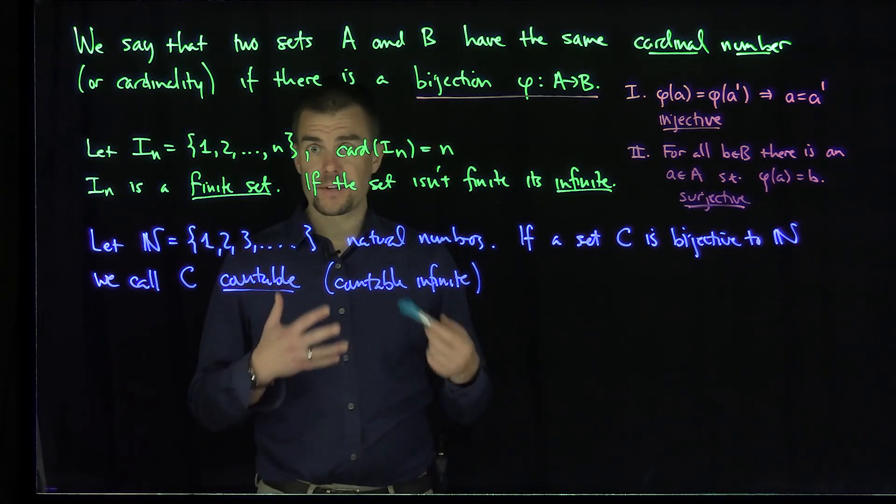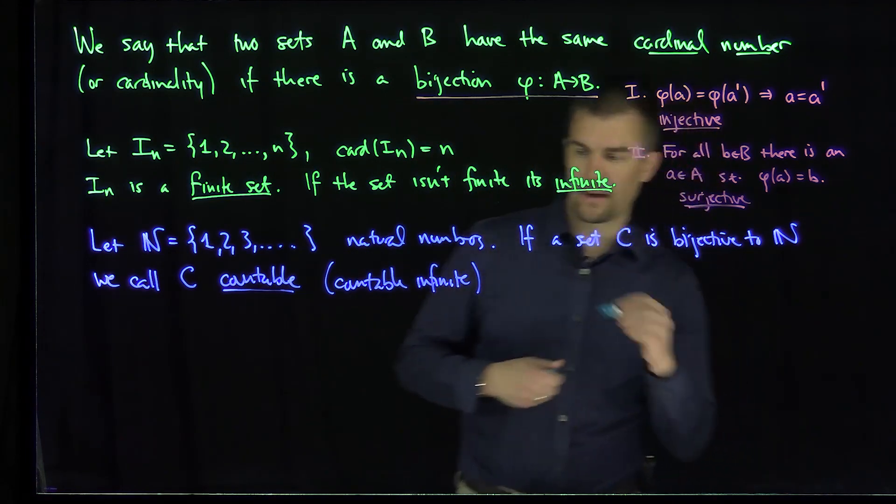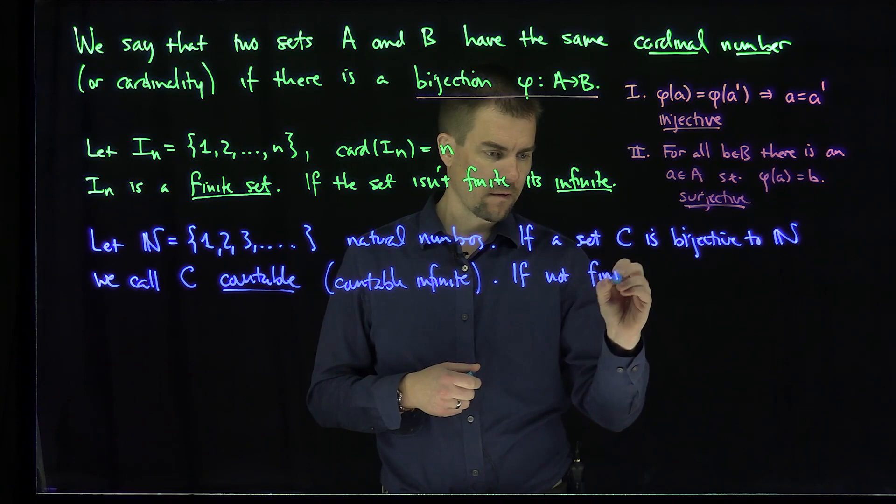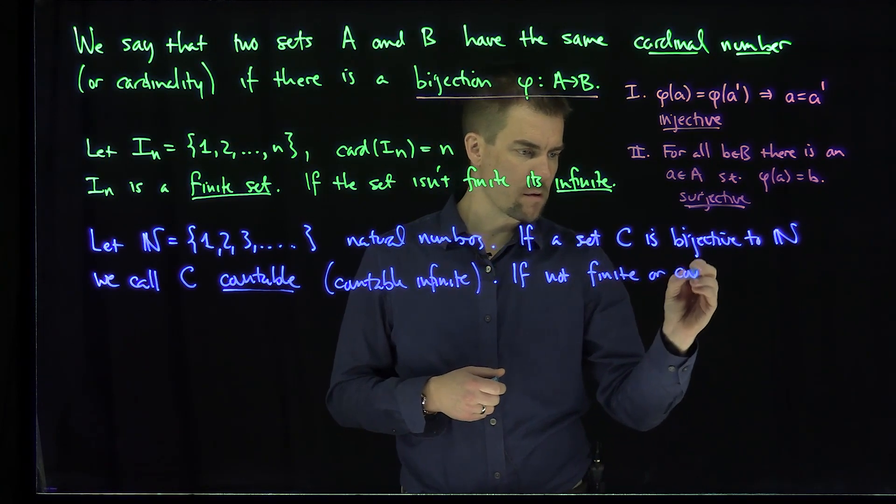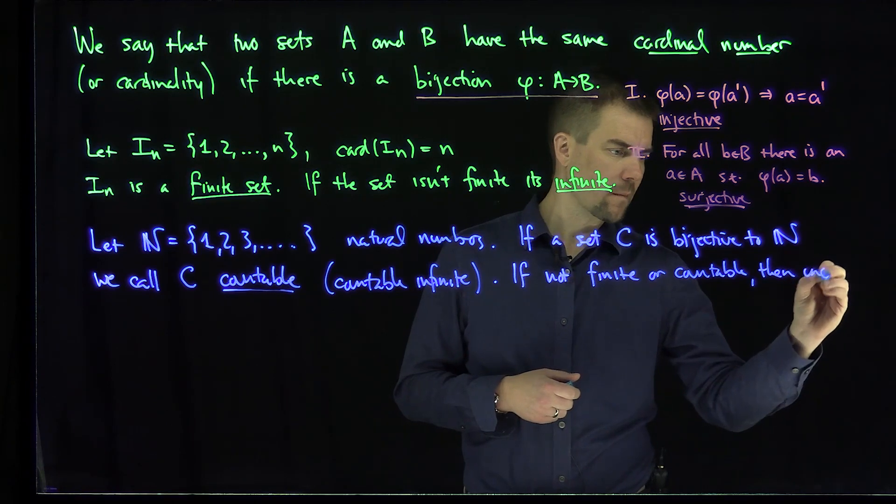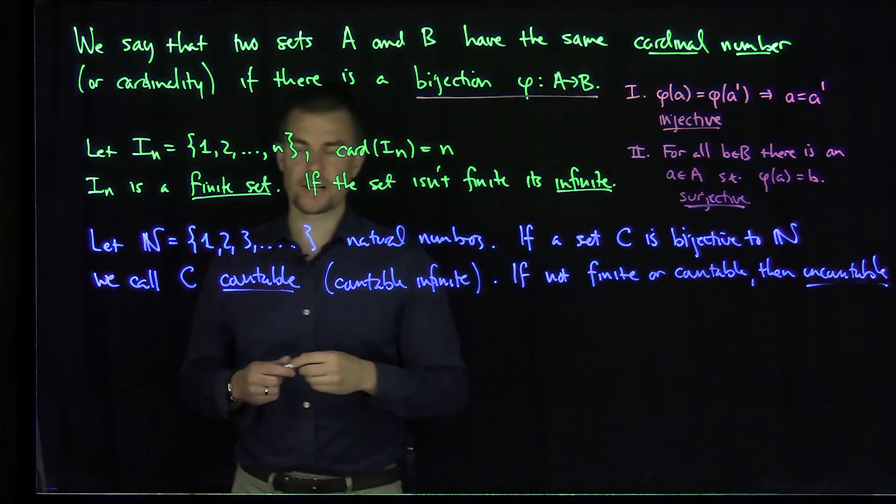And if the set C is not finite or it's not countable, we call the set uncountable. So if not finite or countable, then uncountable.